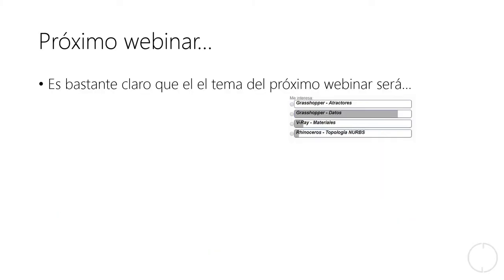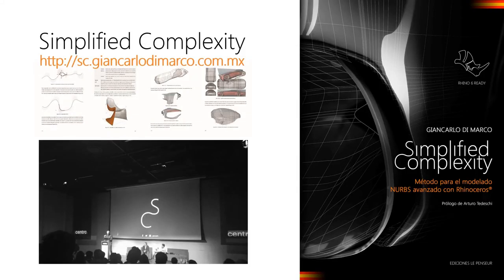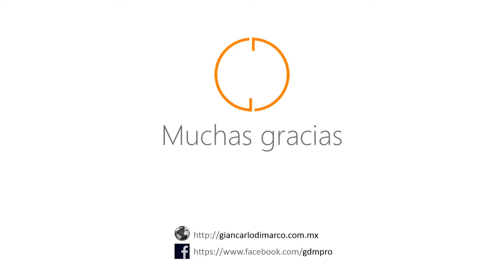Bueno, eso es todo para la píldora de hoy. Les recuerdo que estoy organizando el próximo webinar y hay una encuesta abierta en mi página web donde se puede ayudarme a decidir cuál va a ser el tema. Al momento, Grasshopper Datos es el tema más requerido. Va a ser como una mirada al temario del curso de manipulación de datos de Grasshopper que se encuentra en mi página web. Les recuerdo también la disponibilidad de mi libro en el sitio web sc.jancarrodimarco.com.mx, sobre todo para los usuarios que viven en México. Muchas gracias y hasta la próxima píldora de conocimiento.